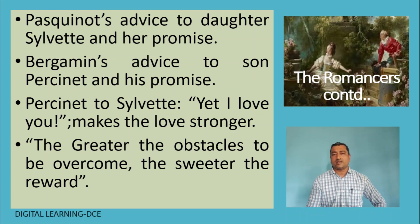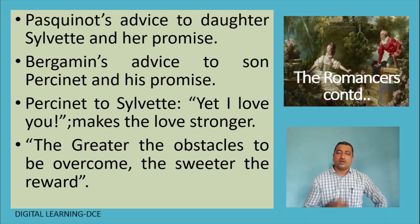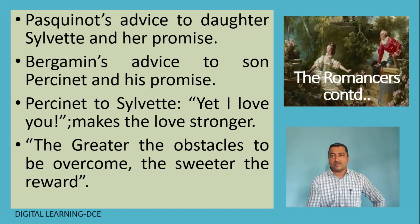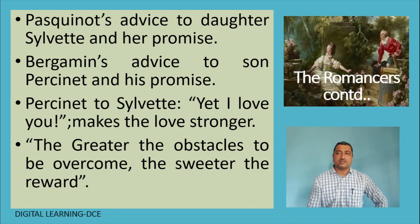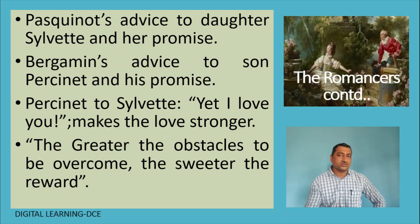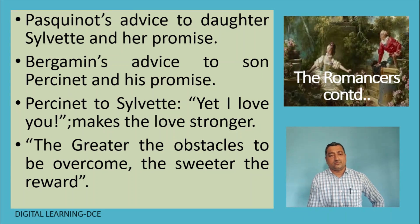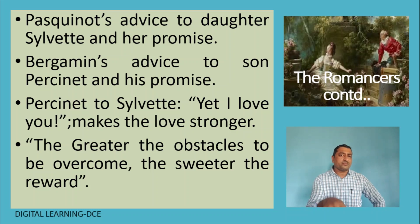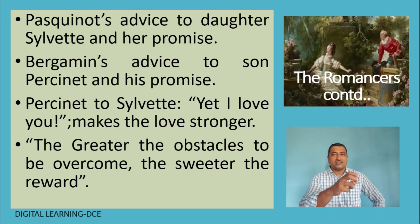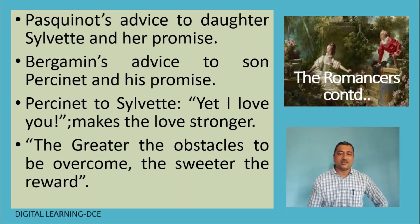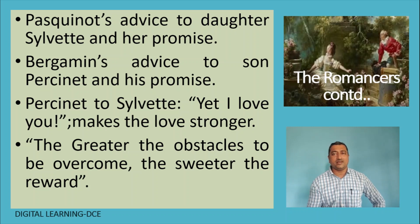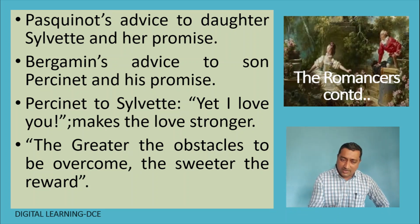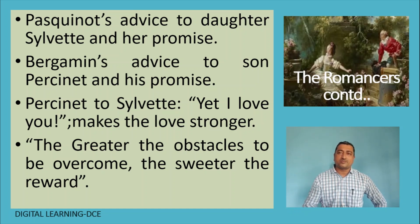Pasquinat tells his daughter Silvette not to go to Bergamin's park and not to love Persinet. He insists and warns her, and she promises her father that she won't — meaning she agrees with her father. Similarly, Bergamin advises Persinet not to go to Silvette and talk to her, and he also promises his father. But both of them never take it as a serious thing — we see Persinet telling Silvette 'yet I love you.' Whatever the promise or whoever disturbs them, he still wants to continue to love her, and the disturbances make their love stronger.